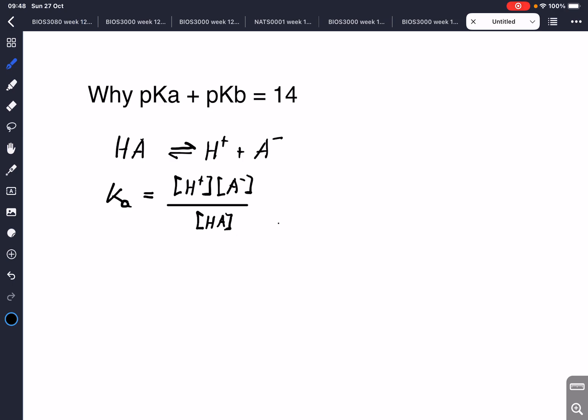So that's our Ka. Now we can do the same reaction for what happens if we add A- the conjugate base to water. So we have A- plus water and the conjugate base will grab a proton from the water and will turn into the acid plus OH-.